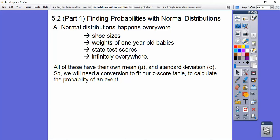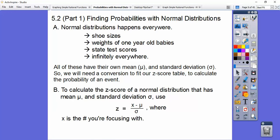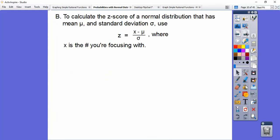So we're going to need a conversion to fit for our Z-score table, our normal distribution table, to calculate the probability of an event. So our Z-score formula here is Z equals X minus the mean divided by the standard deviation, where X is the number that they want you to focus on with your word problem.